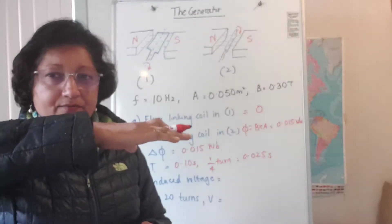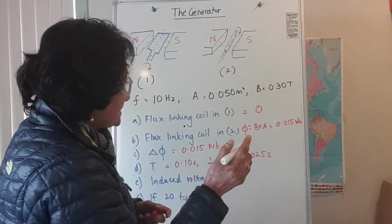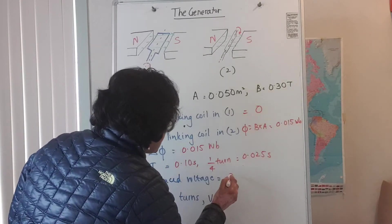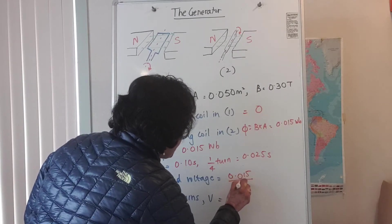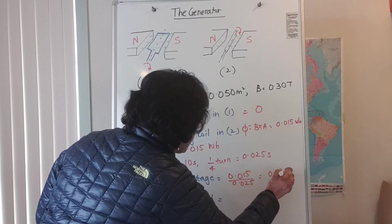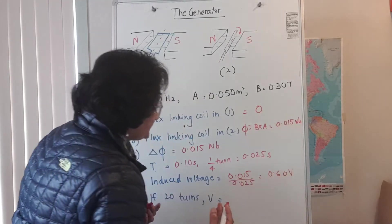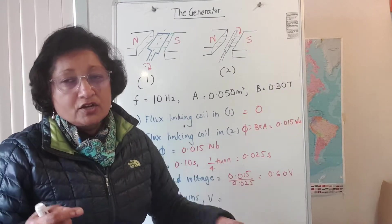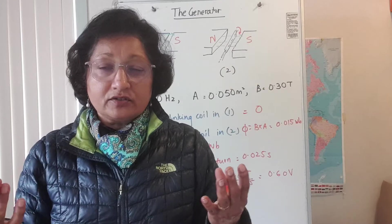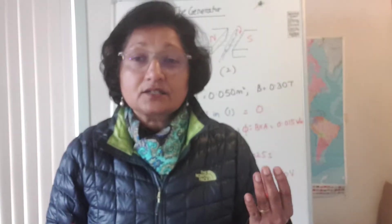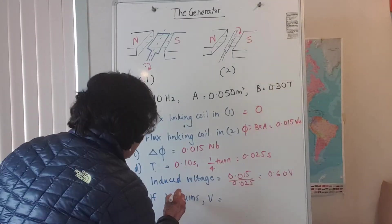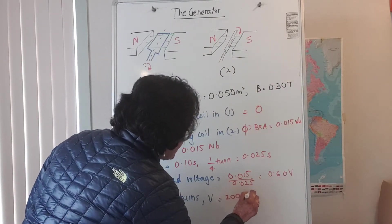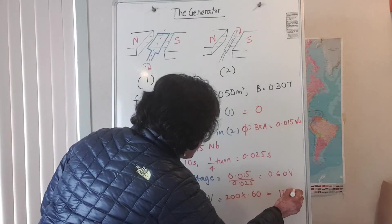The induced voltage when it goes from horizontal to vertical is the rate of change of flux: 0.015 divided by 0.025, which gives 0.060 volts. This is the voltage induced for one turn of the coil. You never find generators with just one turn — they have hundreds of turns. So for 200 turns, the induced voltage is 200 times 0.06, which gives 120 volts.